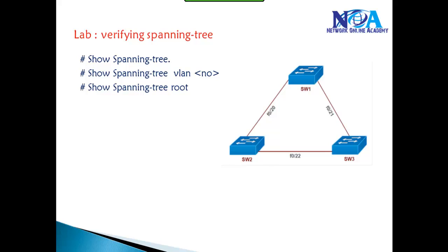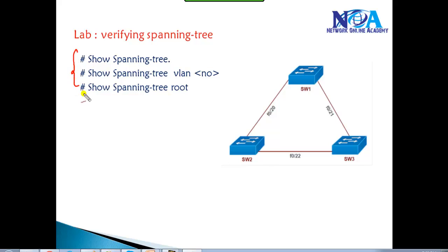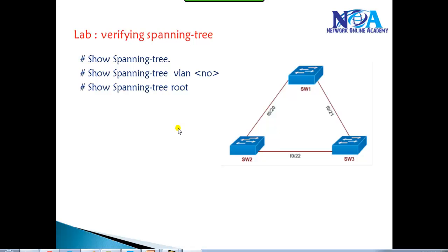The next thing we will be doing in the spanning tree is verification of the spanning tree. I'm going to connect some switches with multiple redundant links. Spanning tree is going to work by default, but we are going to verify the spanning tree behavior by using specific show commands like 'show spanning tree', 'show spanning tree' with VLANs, or on real switches, 'show spanning tree root'.